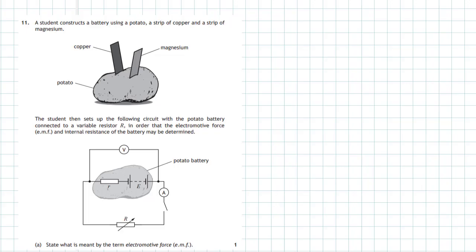Question 11 of the 2018 Higher Physics examination, Section 2. A student constructs a battery using a potato, a strip of copper, and a strip of magnesium. The student then sets up the following circuit with the potato battery connected to a variable resistor R in order that the electromotive force (EMF) and the internal resistance of the battery may be determined. For one mark, you're asked to state what is meant by the term electromotive force.